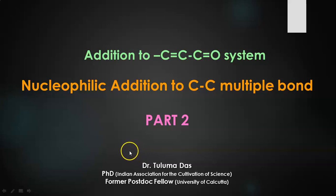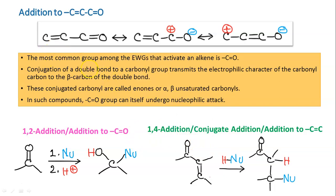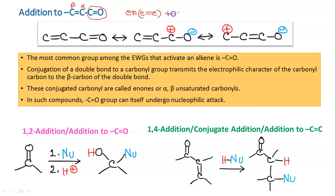Here we have addition to a C=C double bond attached to a C=O double bond. The C=O double bond acts as an electron withdrawing group attached to C=C, and as a result nucleophilic addition to the C=C bond becomes possible. This compound — where a C=C double bond is attached to a C=O double bond — is called an alpha-beta unsaturated carbonyl compound, and is also known as an enone. 'En' refers to the C=C double bond and 'one' refers to the C=O double bond.